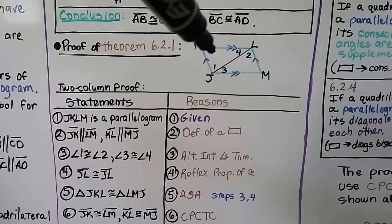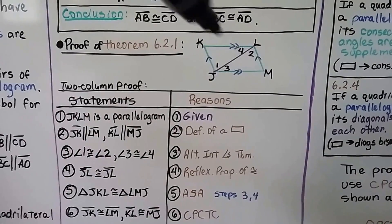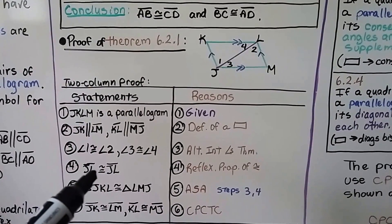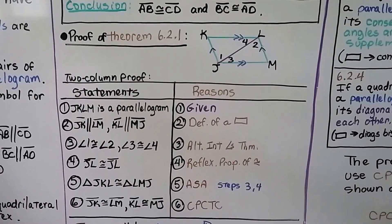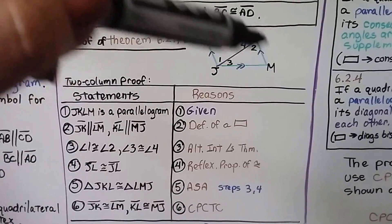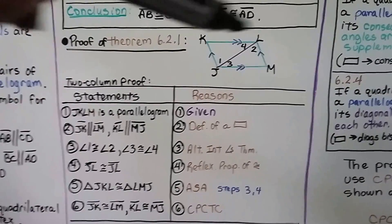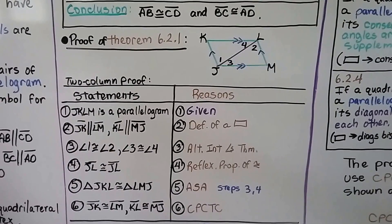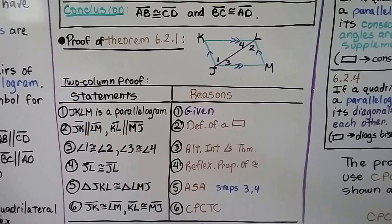Then we've got triangle JKL is congruent to triangle LMJ because of angle side angle from steps 3 and 4. We have an angle, a side, and an angle. And that brings us to number 6. Segment JK is congruent to segment LM, and segment KL is congruent to segment MJ because of CPCTC. Congruent parts of congruent triangles are congruent.